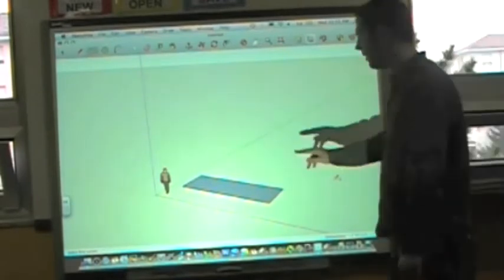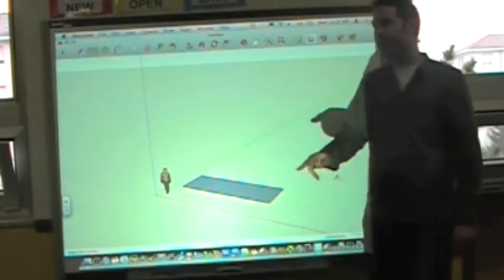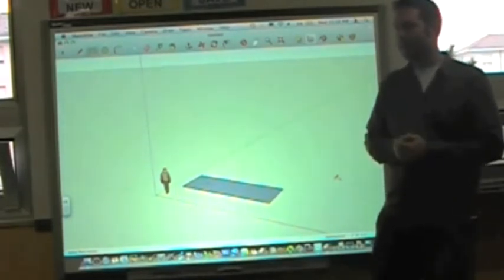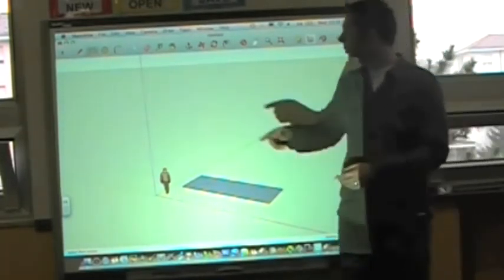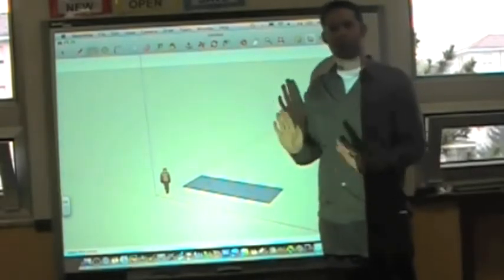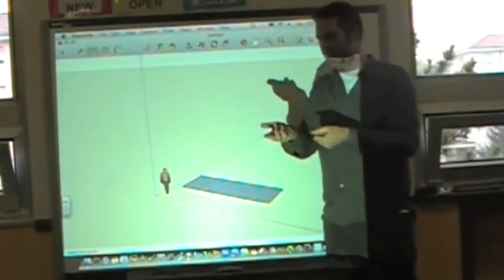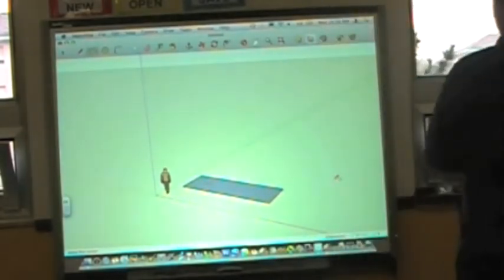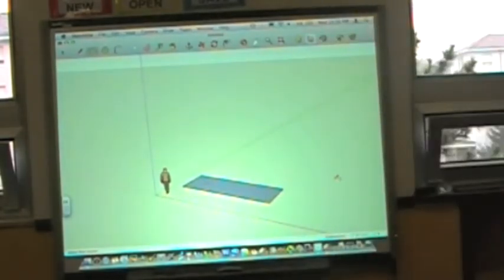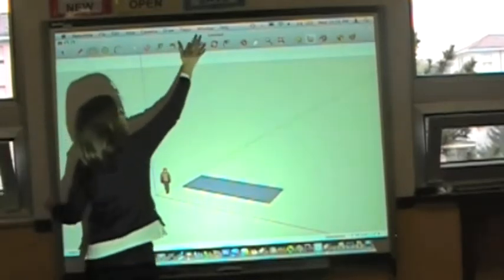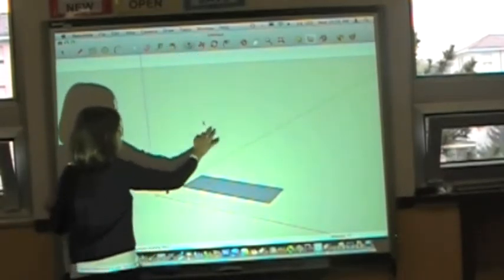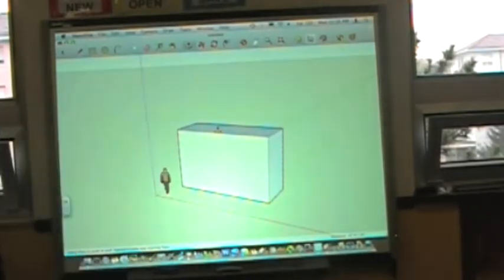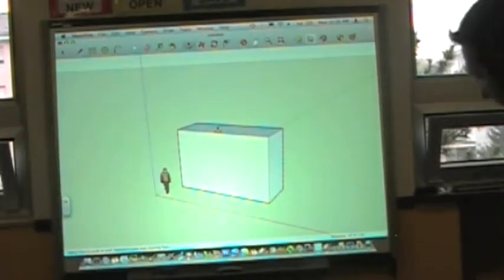What was the next step? This is only a two-dimensional shape. That's right, we need to use the tool here, which is called the push-pull tool. Just like pulling something up by a string. There we go, we've got our three-dimensional rectangle.